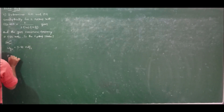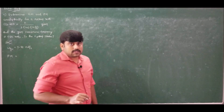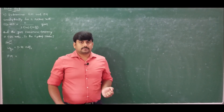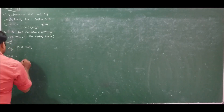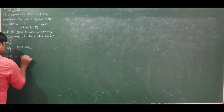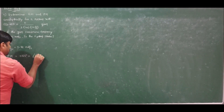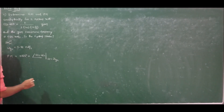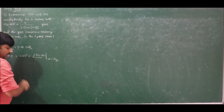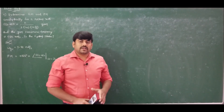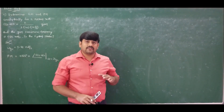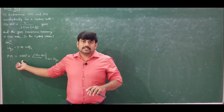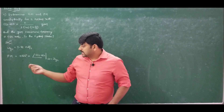From the definition of phase margin, it is the phase lag available to incorporate without reaching the verge of instability. Mathematically, phase margin = +180° + angle of G(jω)H(jω) evaluated at ω = ωgc. We add +180° to nullify the effect of the −180° reference line in the phase angle plot.